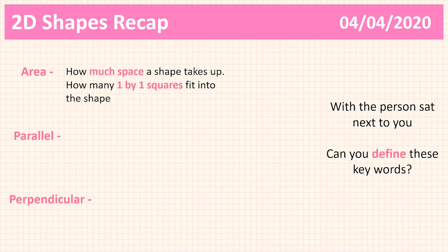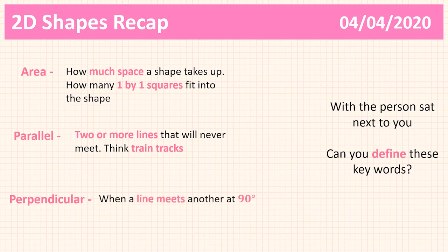For parallel, it's where two or more lines never meet. The best way to think about it is like train tracks — they will never meet, otherwise trains would always get derailed. Perpendicular is where lines meet at 90 degrees.